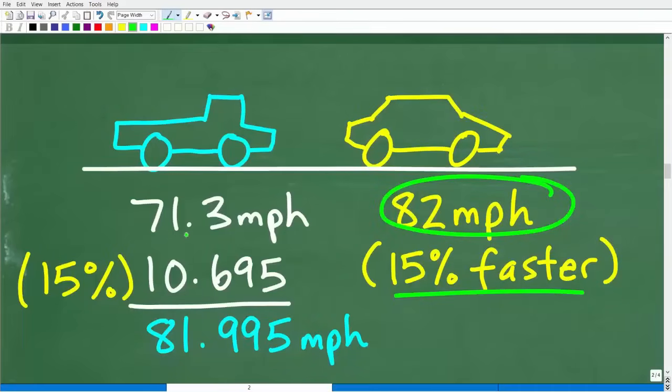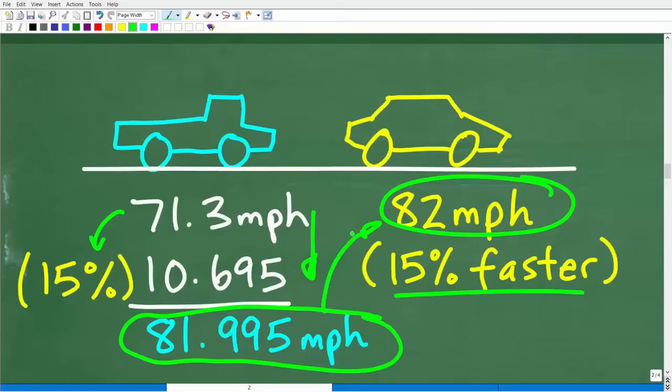So here's the truck speed, 71.3 miles per hour. 15% of 71.3 is going to be 0.15 times 71.3, and that's going to be about 10.695. So let's add these up. So 71.3 plus 10.695 gets us to 81.995 miles per hour. I think that's close enough to say, you know what, I think I did it right. I think the solution is correct.